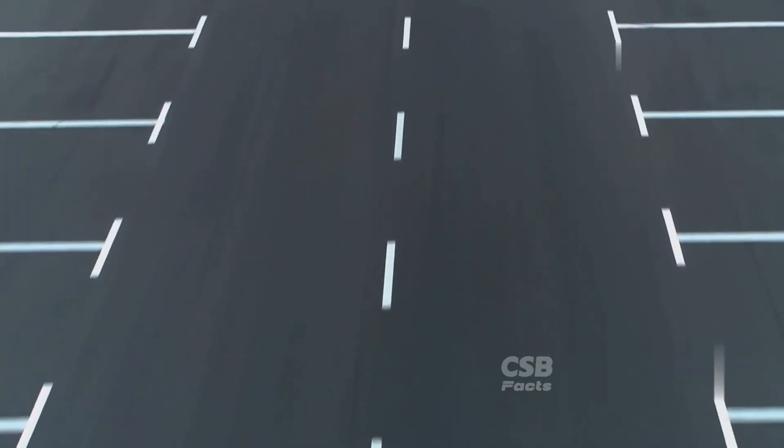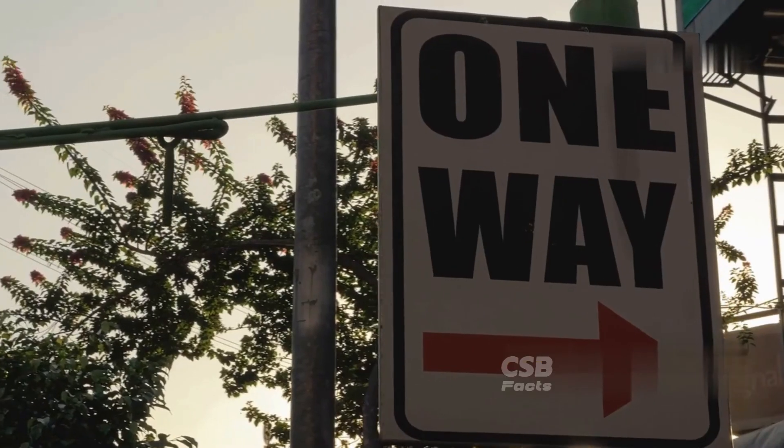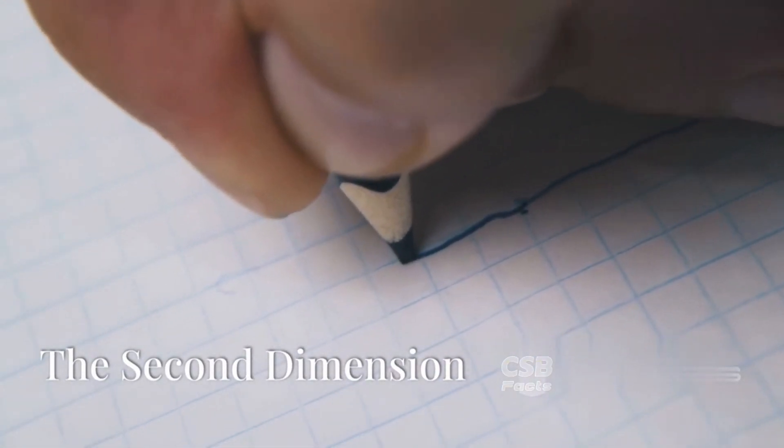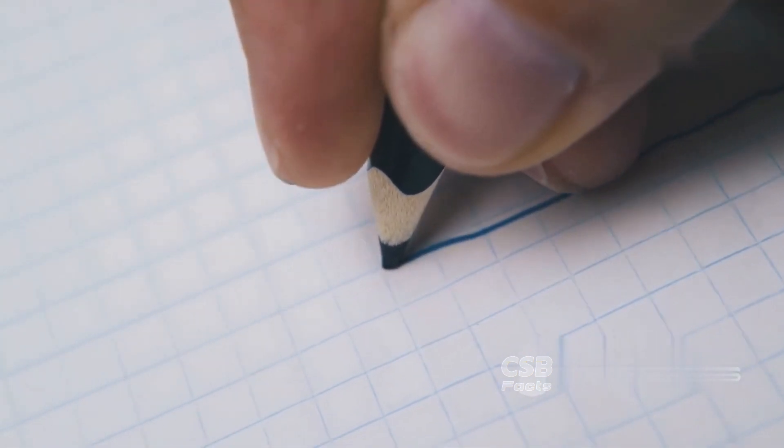This is similar to movement in the first dimension. There's no up, down, or depth, only length. Now let's add another line.